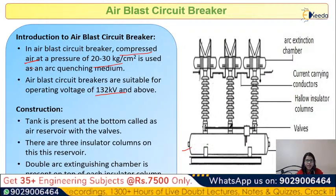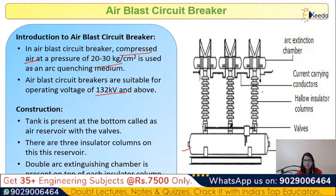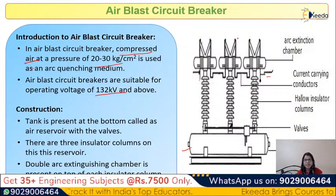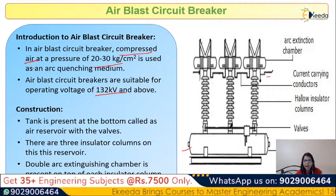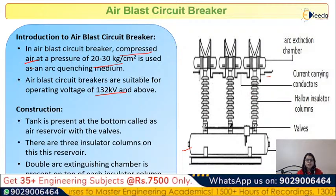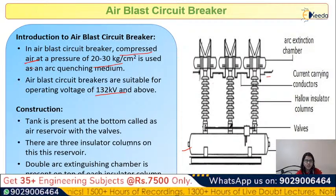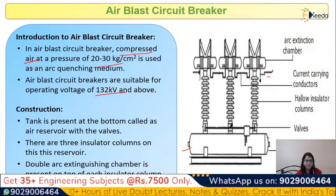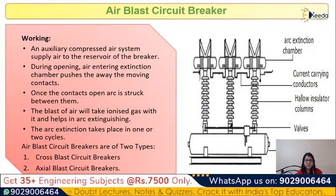The construction of the air blast circuit breaker includes an air reservoir containing compressed air, a valve, hollow insulating cylinders, current-carrying conductors, and arc extinction chambers. The insulators are hollow so that when a fault occurs, compressed air at high pressure reaches the arc extinction chamber. There are three insulating columns, each with one arc extinction chamber on top. Under normal operating conditions the contacts are closed.